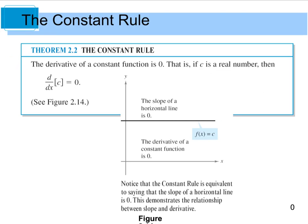And if you look at this as a picture, kind of like what we have right here, we see that we have a horizontal line. Hopefully by now you remember that the slope of a horizontal line is 0. Therefore, the derivative of a constant is also 0, because the derivative of a constant is the same thing as the slope of a constant, which is also 0.